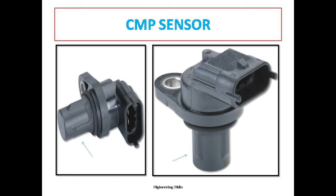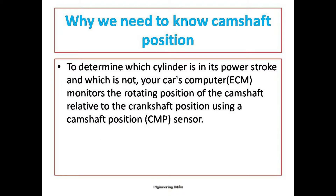The CMP sensor image is the same as the crankshaft position sensor CKP sensor — both are the same type of sensor and do the same work. Now, why do we need to know the camshaft position? The camshaft determines the position of the piston based on the inlet and outlet valves opening and closing. The camshaft, with the help of teeth at 120 degrees each, collects data and sends it to the ECM.